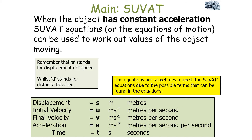It's important to note that in the context of SUVAT, s stands for displacement, not speed, while d would stand for distance travelled. Displacement is a vector quantity and it is the straight-line distance between the starting point and the end point of a journey, while distance travelled is just how far an object has moved overall in its journey.